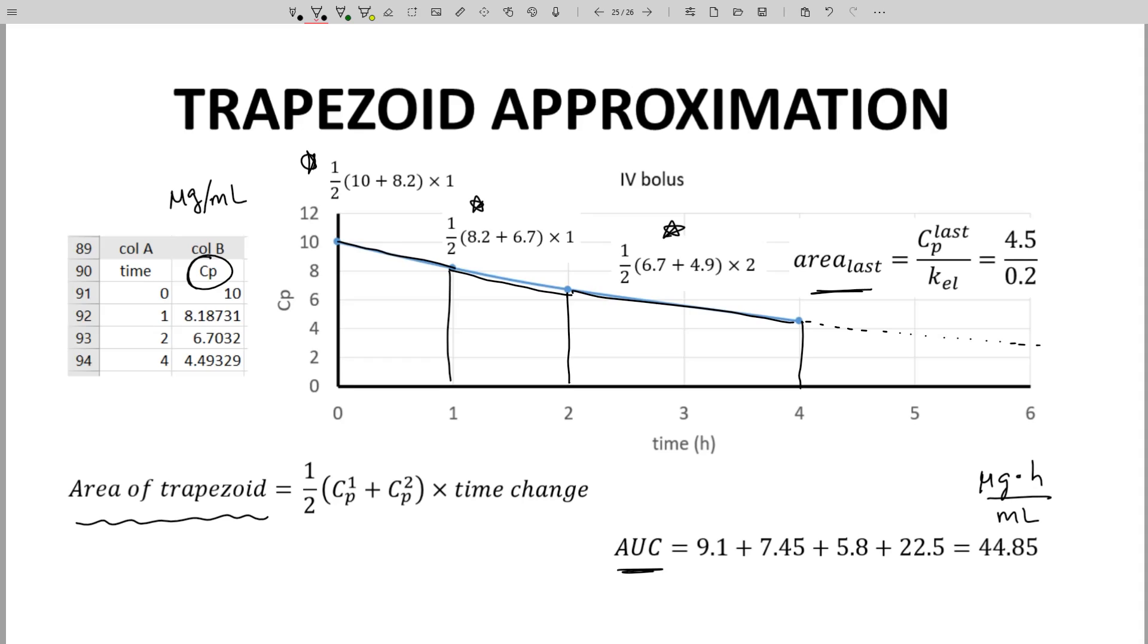AUC is an indication of drug exposure, an important idea for drug safety and efficacy. AUC calculations like this one are also critical for determination of other pharmacokinetic parameters, which we will see in later videos.